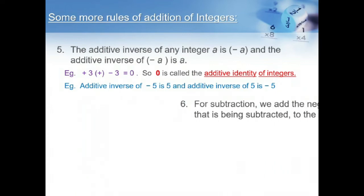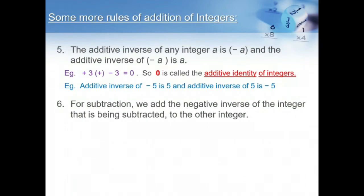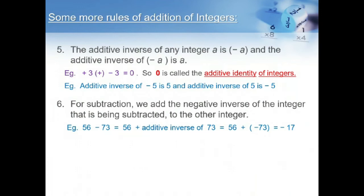When we subtract two integers, we add the additive inverse of the integer that is being subtracted to the other integer. For example, take two numbers 56 and 73. Here, 56 is a positive integer and 73 is also a positive integer, and we are subtracting these two numbers. So what we do is: 56 plus the additive inverse of 73, that means we get 56 plus of minus 73, which is equal to minus 17.